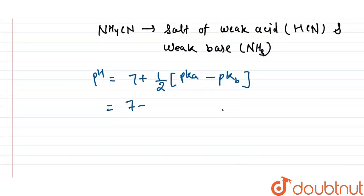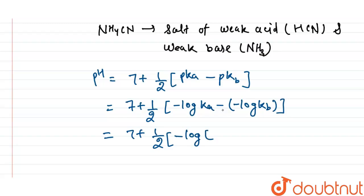Now it is equal to 7 plus half. pKa is equal to minus log of Ka, and pKb is equal to minus log of Kb. Now put the values, so we get 7 plus 1 by 2 times minus log Ka, given as 6.2 into 10 to the power minus 10, minus minus plus, so plus log Kb is equal to 1.6 into 10 to the power minus 5.